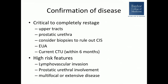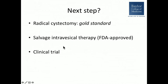You should also consider exam under anesthesia and ensure your CT urogram is current within six months. High-risk features — including lymphovascular invasion, prostatic urethral involvement, or multifocal or extensive disease — portend a much greater risk of progression. Even if the patient has TA or T1 right now, these features suggest they are more likely to return with T2, T3, or T4 disease, so you will want to emphasize the importance of early cystectomy.